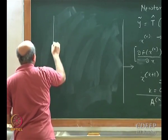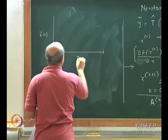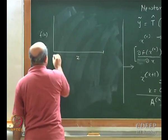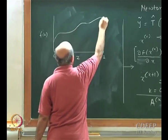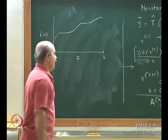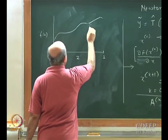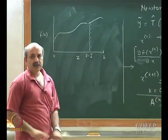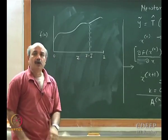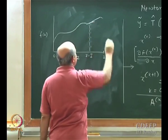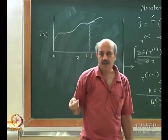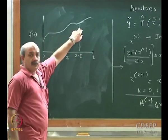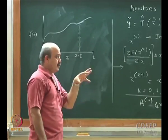Consider a set of continuously differentiable functions on the interval [0, 1]. At some point z = z̄, I want to construct a local approximation of the derivative of this function. You know forward difference and backward difference approximations. I want to put them in the context of Taylor series so that the connections become clear.